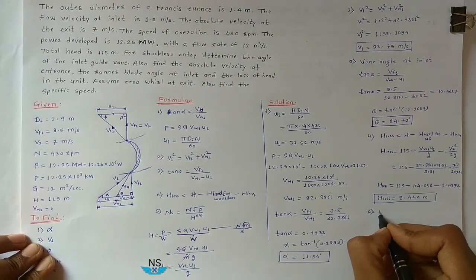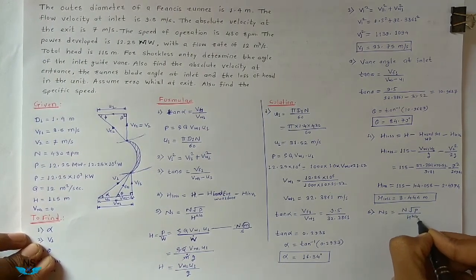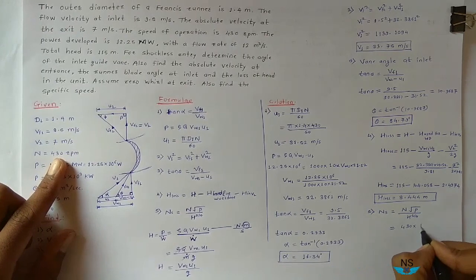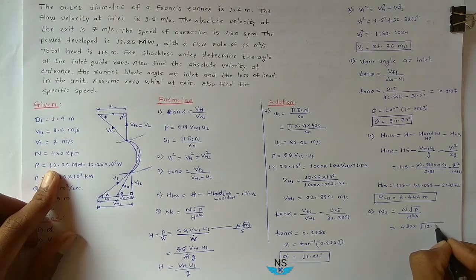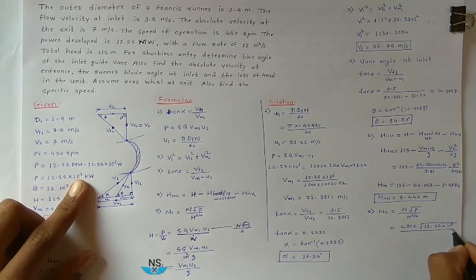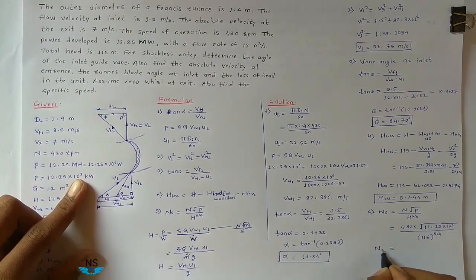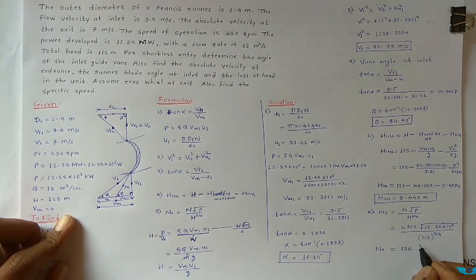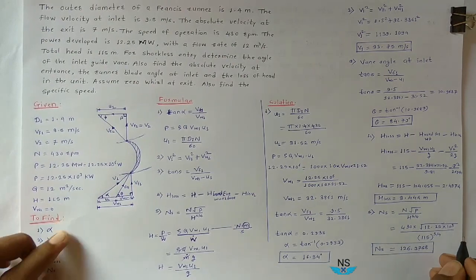Fifth, find the Specific Speed. Ns = N√P / H^(5/4) = 430 × √(12.25 × 10³) / 115^(5/4). Putting all the values into the calculator, the Specific Speed equals 126.3758. In this way you can calculate all the quantities asked in this question on the Francis Turbine problem.